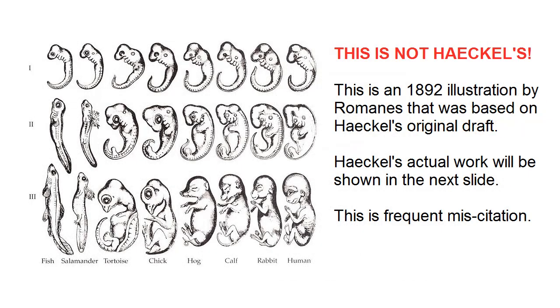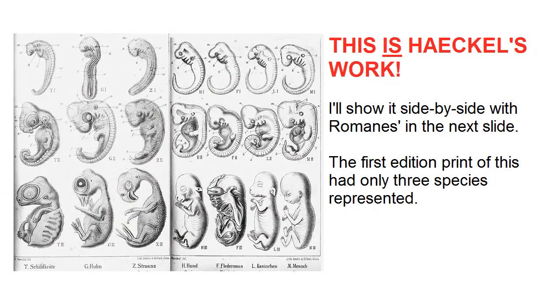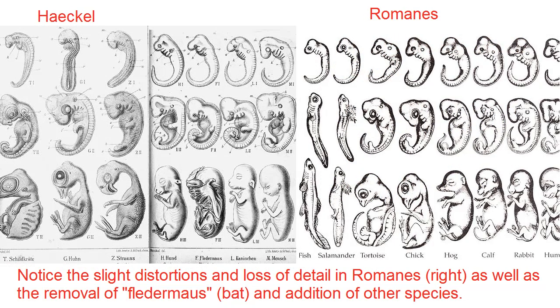I have no interest in defending Haeckel's illustrations. He was wrong on many things — a brilliant scientist with a sort of new-age spiritual mania. His illustrations of embryos reflect both his artistic attention to symmetry and his quite false beliefs in his own biogenic law. I want to address two primary topics: first, what was Haeckel trying to accomplish with his illustrations? And second, what was the damage of his illustrations to modern evolutionary theory?